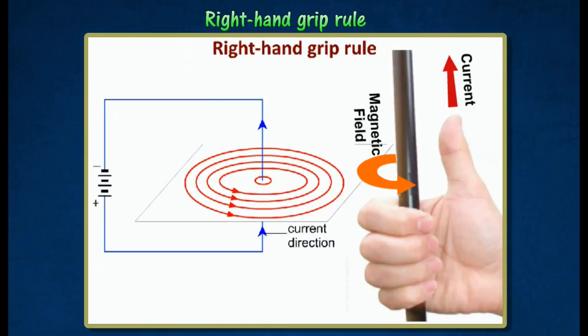According to the Right Hand Grip Rule, the direction of the fingers gives the direction of the magnetic field when the thumb is pointing along the wire in the direction of current.